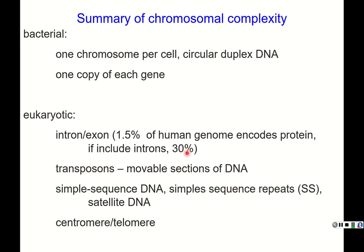The remaining roughly 70% of the genome includes things called transposons — movable sections of DNA — as well as simple sequence DNA with simple repeats, also called satellite DNA. Then you have the centromere and telomere regions.